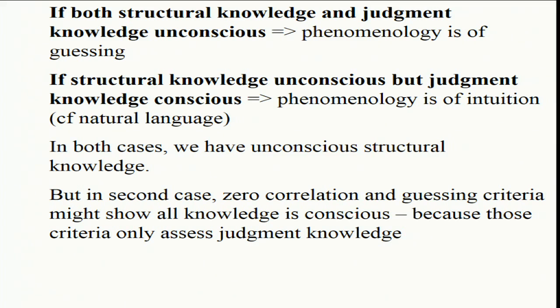That is the typical case in natural language — your knowledge of English grammar is largely unconscious, but you can consciously judge or have conscious judgement knowledge that this sentence is good or not quite proper English. When both structural knowledge and judgement knowledge are unconscious, it feels like you're just guessing — that's the guessing case. Structural knowledge is unconscious, judgement knowledge is unconscious — you knew the string was grammatical but you didn't know that you knew it. You're just guessing. And when structural knowledge is unconscious but you know you got the judgement right, the normal way to express that is intuition — 'I don't know why it's right, just my intuition.'